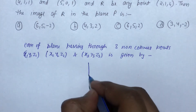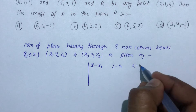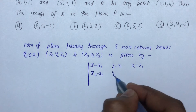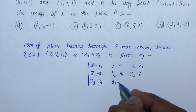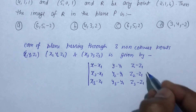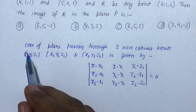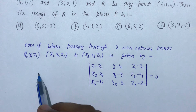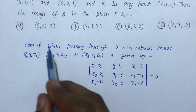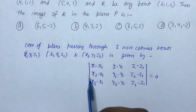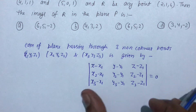The determinant formula is: the determinant of [x minus x1, y minus y1, z minus z1; x2 minus x1, y2 minus y1, z2 minus z1; x3 minus x1, y3 minus y1, z3 minus z1] equals zero. In the first row you put x minus x1, y minus y1, z minus z1. Then subtract the first point from the second point to get the second row, and from the third point for the third row. This gives you the equation of the plane.